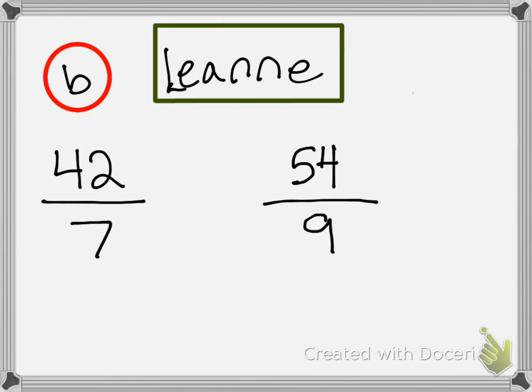So walk us through it, Leanne. You're the teacher. We're going to divide each to try to get our unit rates. What do we get? Walk us through it, Leanne. You divide by seven. We divide by seven. And what do we get? One. And what's on the top? Six. Yeah, we get six.